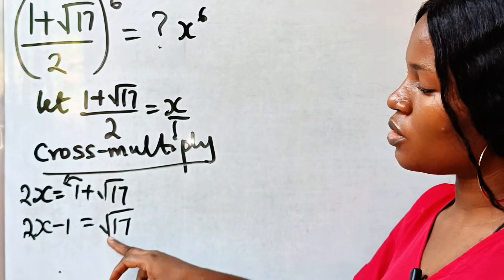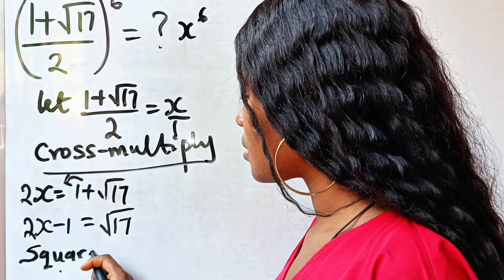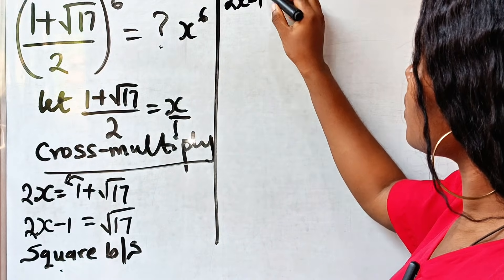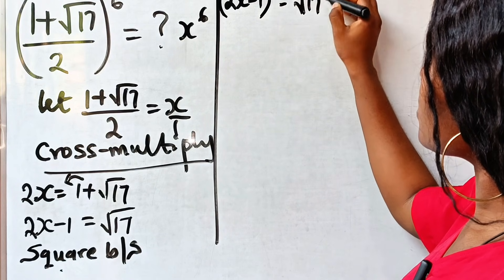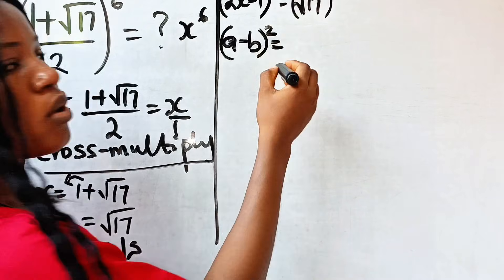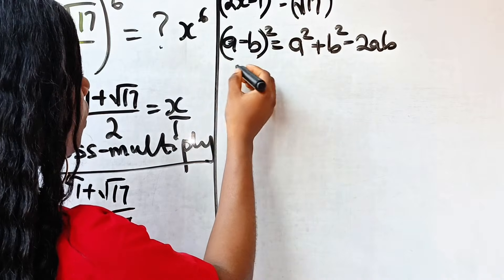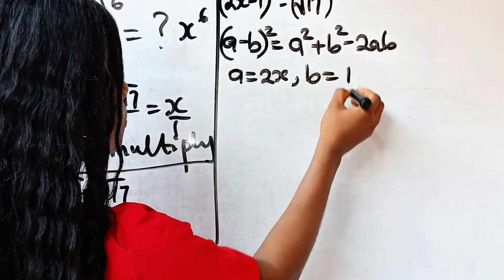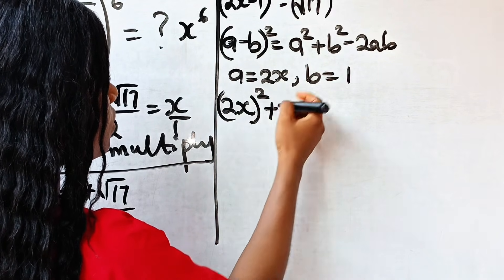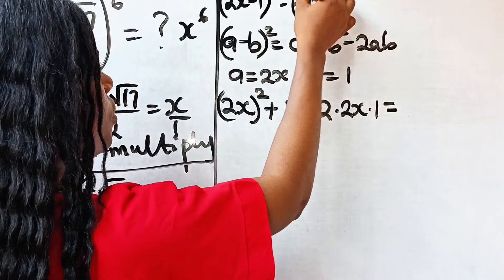Now let's transfer this to the other side: we have 2x minus 1 is equal to √17. To remove this root sign, let's square both sides of the equation. So we have (2x − 1)² equal to (√17)². Using (a − b)² = a² + b² − 2ab, with a = 2x and b = 1, we expand to get 2x squared plus 1 squared minus 2 times 2x times 1, which equals 17.